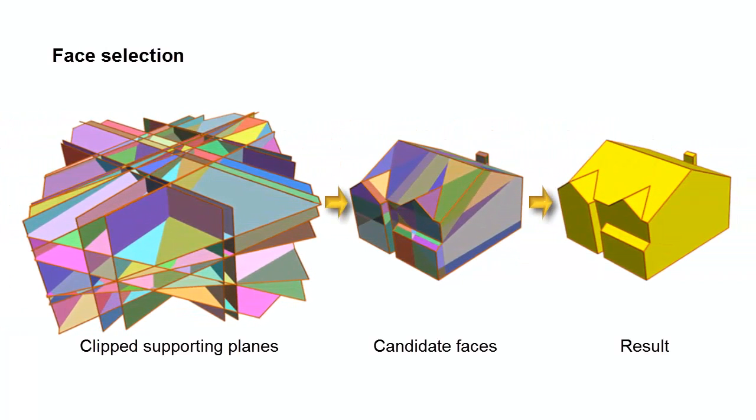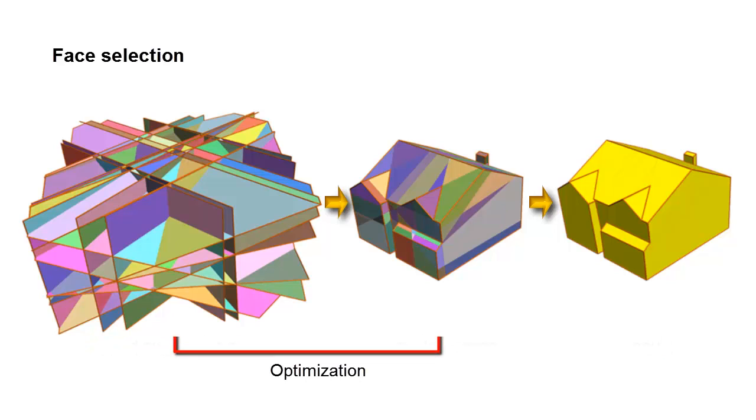In the selection phase we choose an optimal subset of the candidate faces to assemble a manifold and watertight polygonal surface model. We formulate the face selection as a binary linear programming problem.